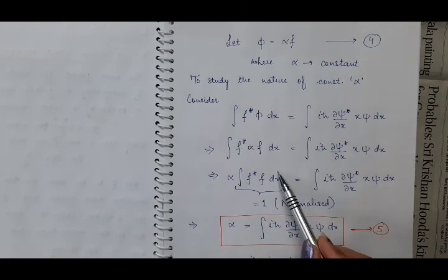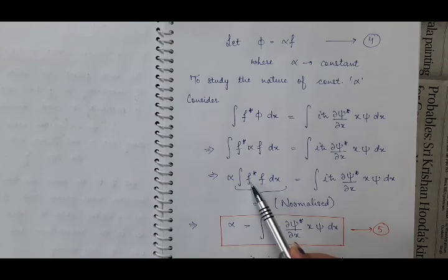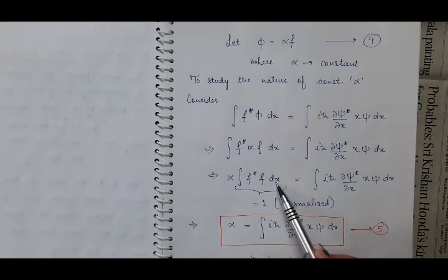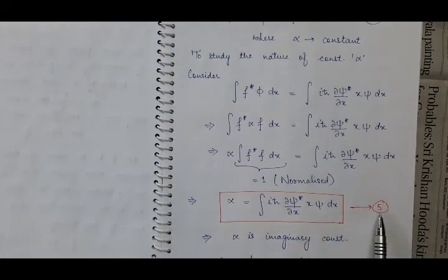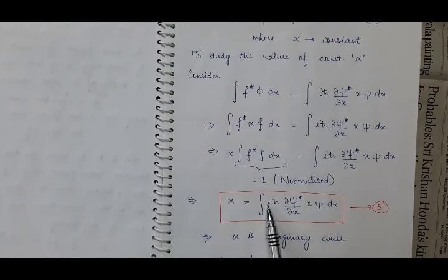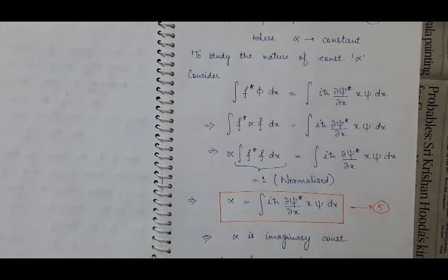Since psi is a normalized function, f will also be a normalized function. So the integration of complex conjugate of f into f over dx equals 1. From equation 5, we can conclude that alpha involves iota, and psi star also has iota, giving iota squared which is a real quantity, but the remaining iota makes the whole right-hand side imaginary. Therefore, the nature of alpha is that alpha is an imaginary constant.